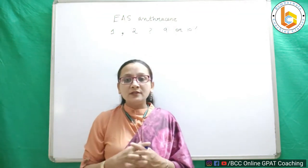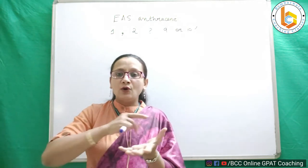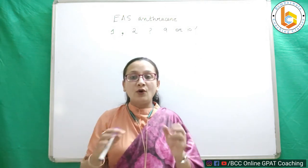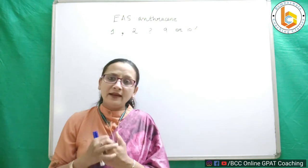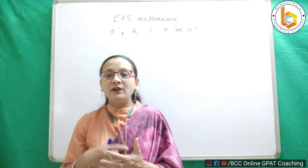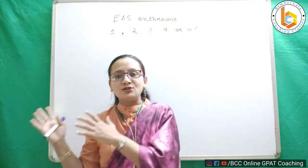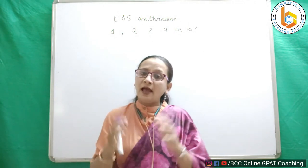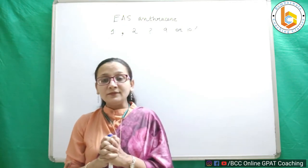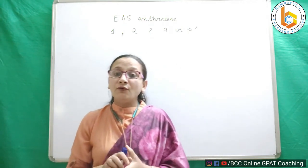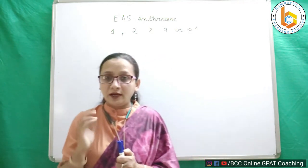Anthracene shows electrophilic aromatic substitution because it has a lot of pi electrons that are all resonating. It is electron-rich and a stable structure. The same reason why benzene shows electrophilic aromatic substitution applies to anthracene. The question we are addressing is where in anthracene this substitution will occur.